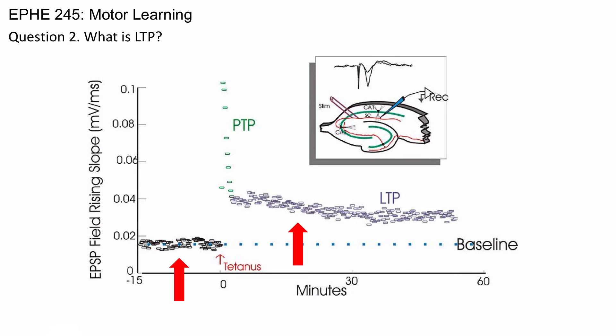How does LTP occur? Typically, it occurs by rapid stimulation of a neuron, which is called tetanus. In practical terms, we can think of repetition of a skill. When a skill is repeated, there is long-term potentiation at the synapses of the neurons that are involved in skill production.